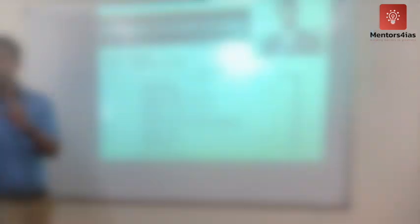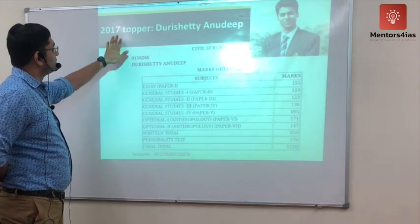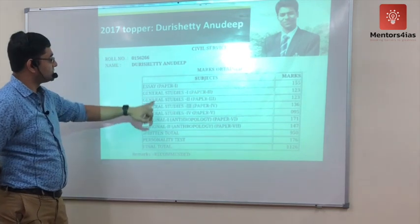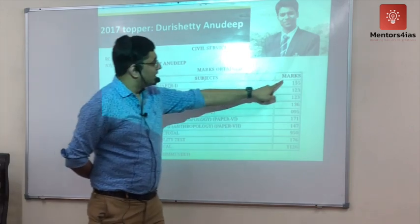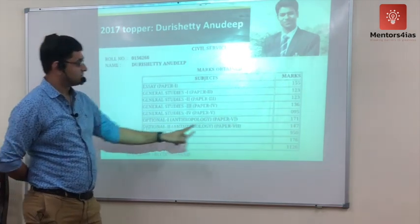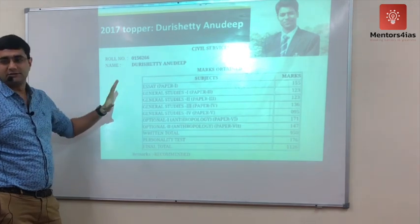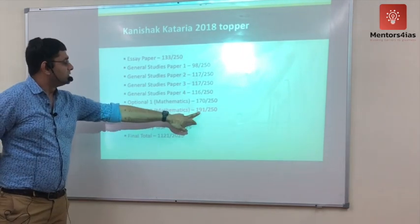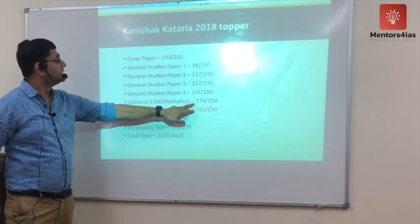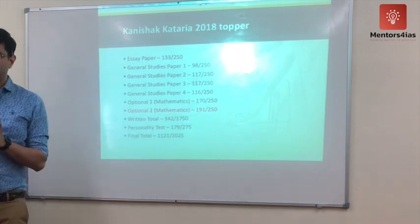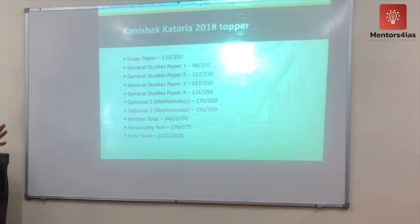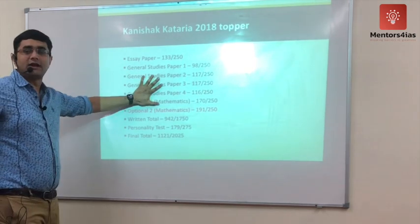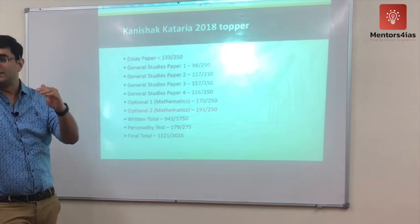If you score around 1100 plus, you'll make it into the top hundreds. Looking at scoring subjects, the topper's marks across essay, general studies one, two, three, four, and anthropology optional show that the scoring subjects are optional and essay. This year's topper had maths as optional and scored 191 — the highest across all papers, followed by 170 in the other optional paper.